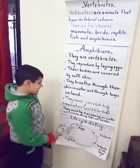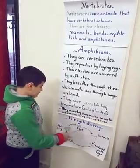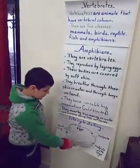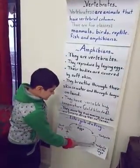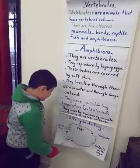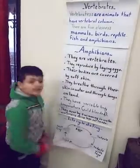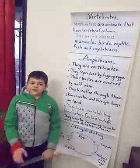The life cycle of a frog starts as eggs, then develops into a tadpole with legs, and finally becomes a frog.